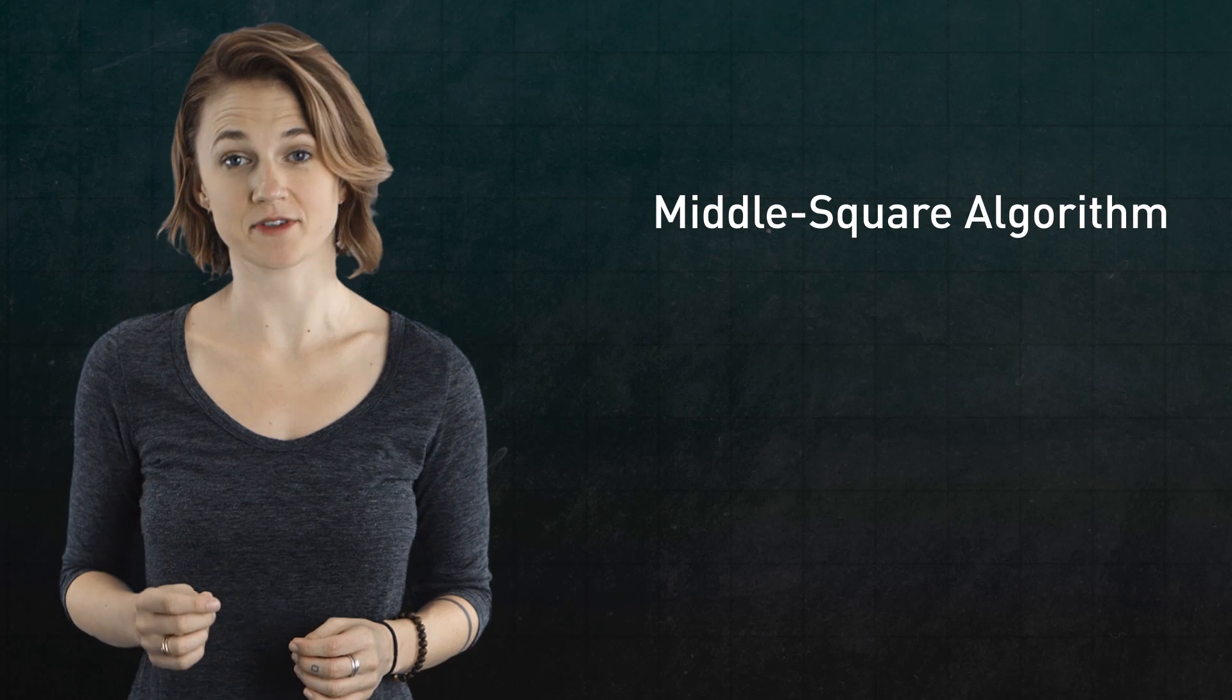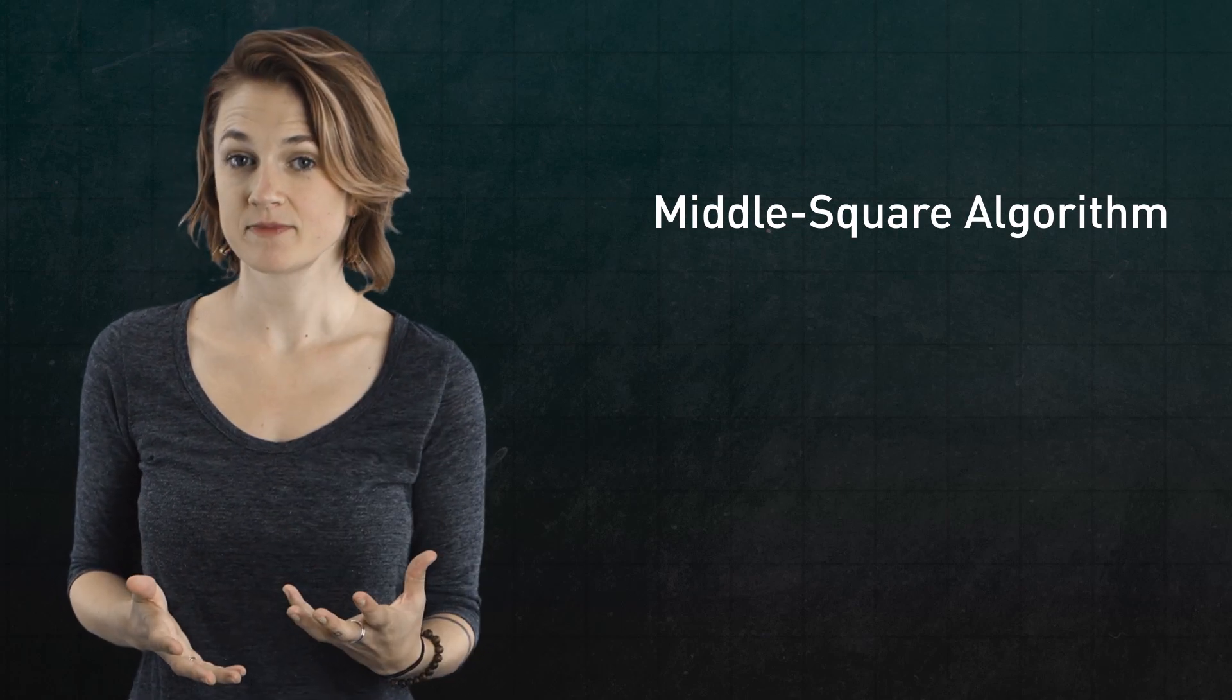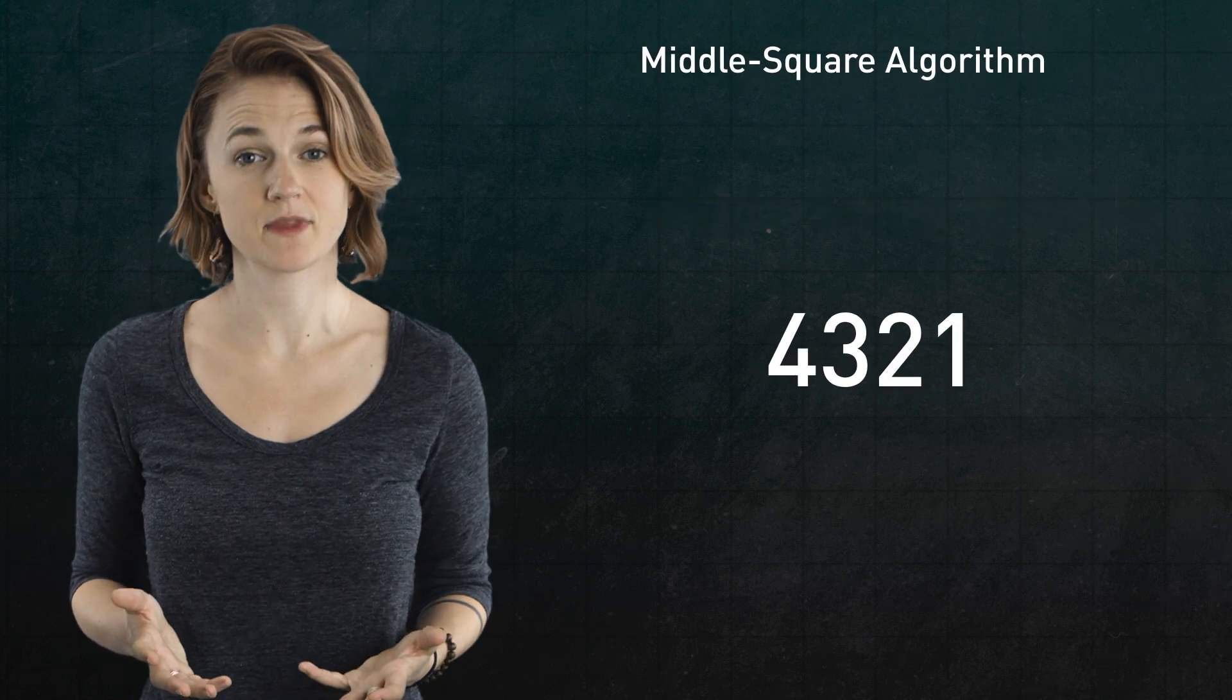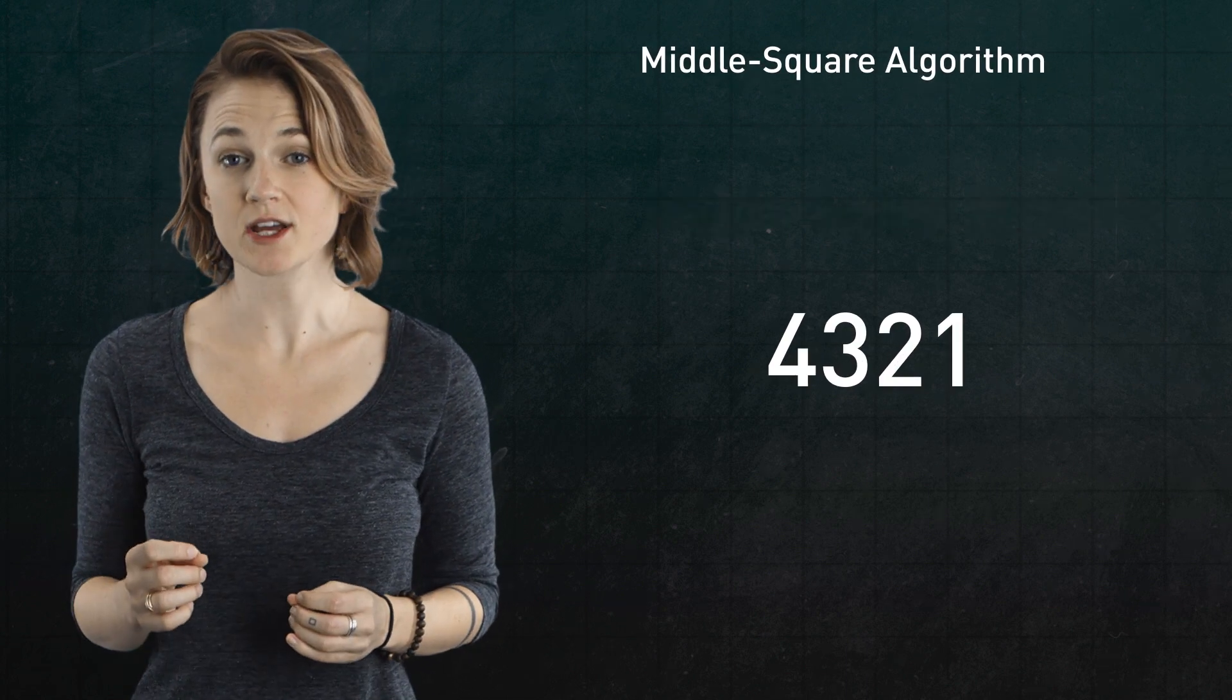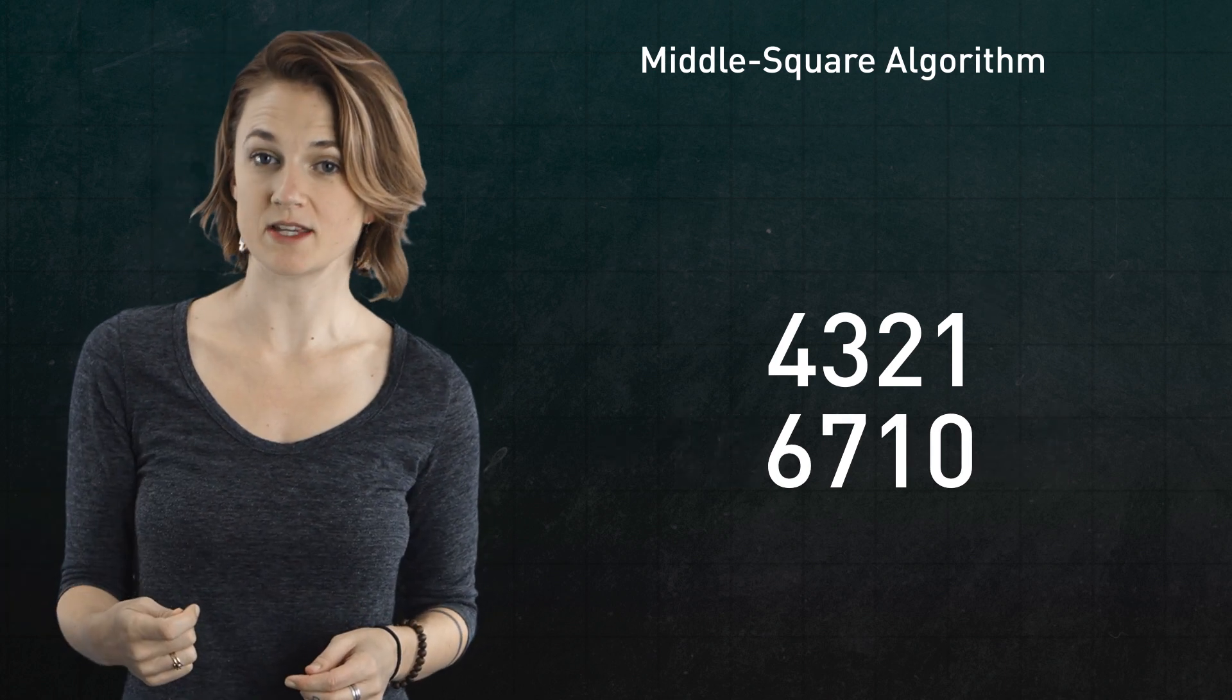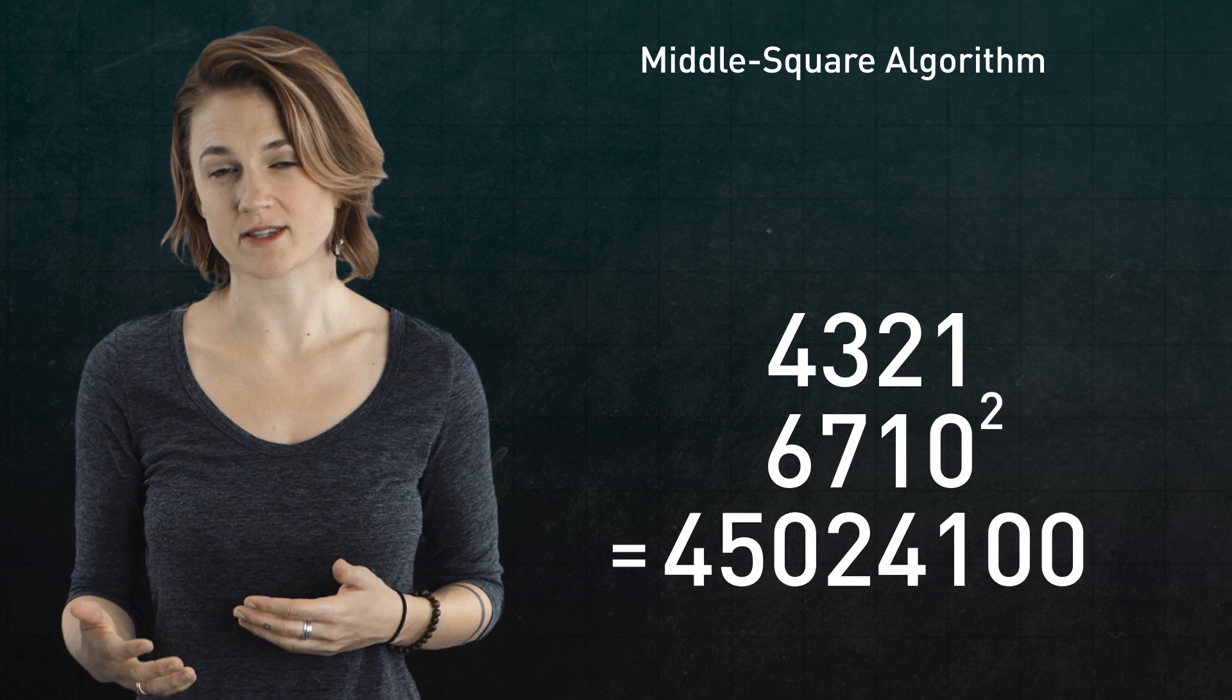For example, here's John von Neumann's middle square algorithm. You start with a number called the seed. Let's say it's a four-digit number, like 4,321. As the algorithm's name suggests, you square it and extract the middle four digits. That's the next term in the sequence. Then you just repeat that process.